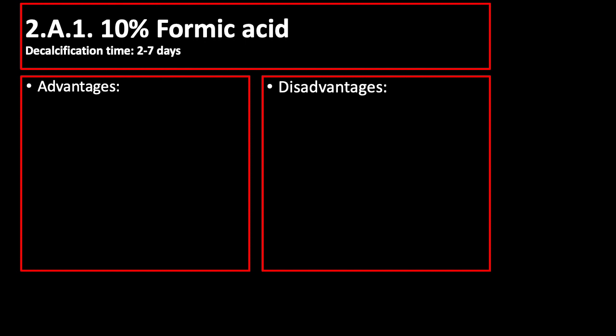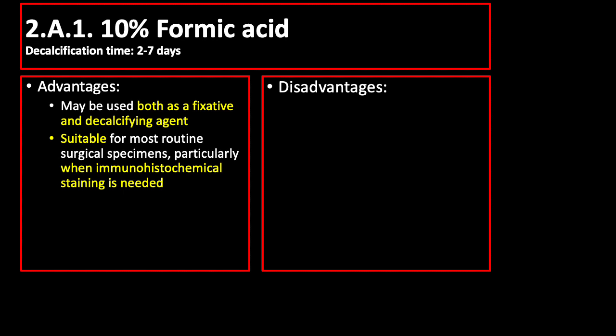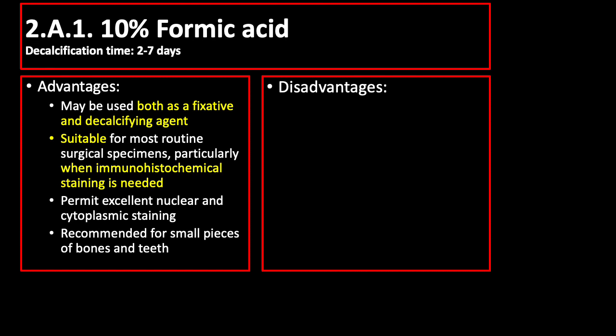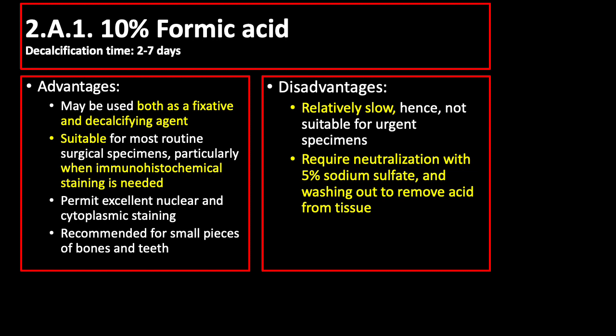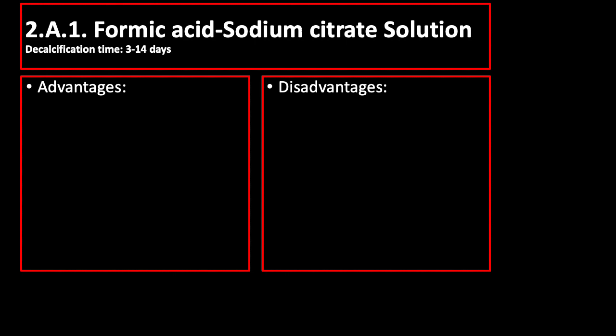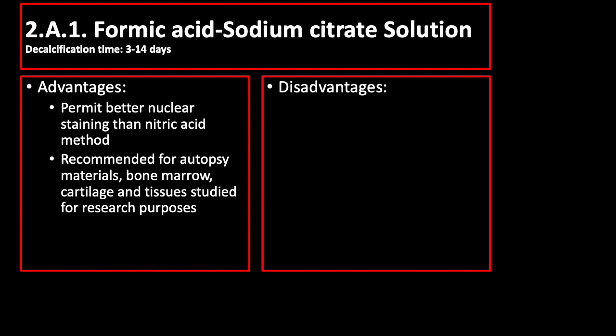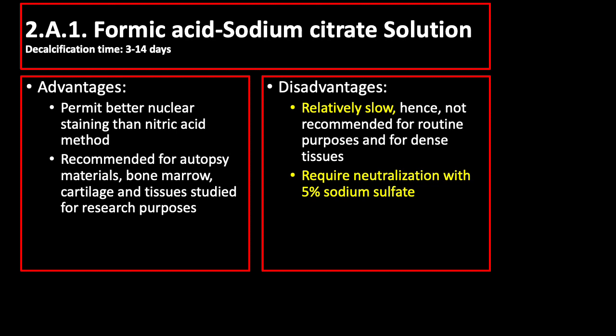The preparations of formic acid as a decalcifying agent include: 10% formic acid with a decalcification time of 2 to 7 days. It may be used both as a fixative and decalcifying agent, and is suitable for most routine surgical specimens particularly when immunohistochemical staining is needed. Disadvantages include that it is relatively slow and hence not suitable for urgent specimens, and it requires neutralization with 5% sodium sulfate and washing out to remove acid from the tissue. Formic acid sodium citrate solution has a decalcification time of 3 to 14 days.